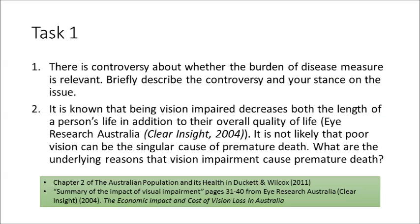Let's get on to the first task. I want you to refer to Chapter 2 of the Australian Population and its Health in Duckett and Wilcox — you should have read this section for a previous task anyway — and read the summary of the impact of vision impairment, pages 31 to 40, from the iResearch Australia Clear Insight report, which is entitled The Economic Impact and Cost of Vision Loss in Australia. Once you've done that, answer these questions.